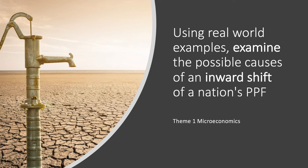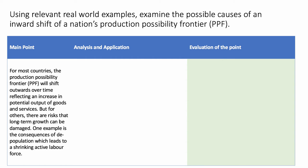Welcome back to another video featuring theme 1 microeconomics. In a previous video we looked at some of the factors that might cause an outward shift of a country's PPF. This question flips it around: using real-world examples, examine the possible causes of an inward shift of a nation's PPF. What we're trying to do is make our point, build application, build analysis, and then evaluate the point we've made. That's the way to write really good economics essays.